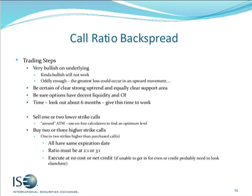All of the options will have the same expiration date. The ratio is two-to-one or three-to-one. We want to execute this at no cost or at a net credit. If you're adjusting strike prices and you're unable to get it even or at a credit, we probably need to go elsewhere. Flipping back to FX options in this scenario: FX options are priced at half-point intervals — for example, 124, 124.5, 125, 125.5. You may have to do the math to move the strikes out a bit to get the separation needed to achieve no cost to net credit.